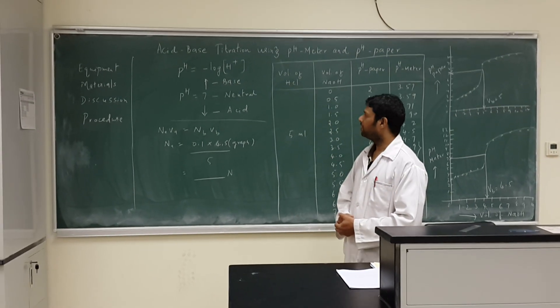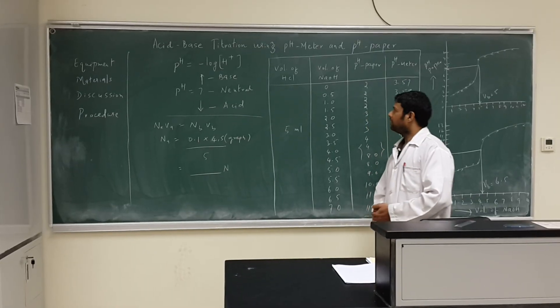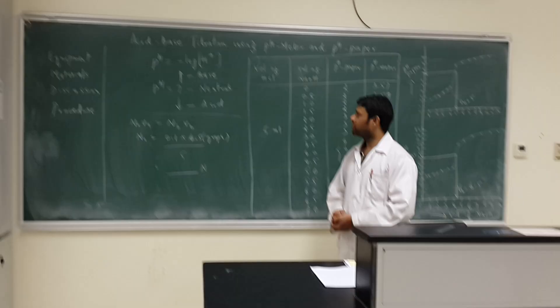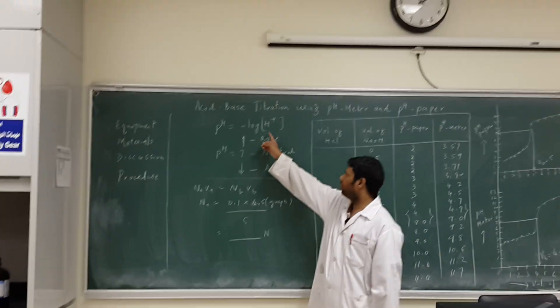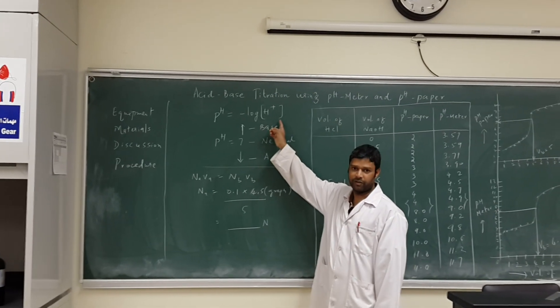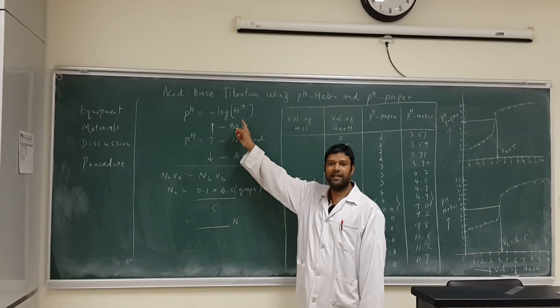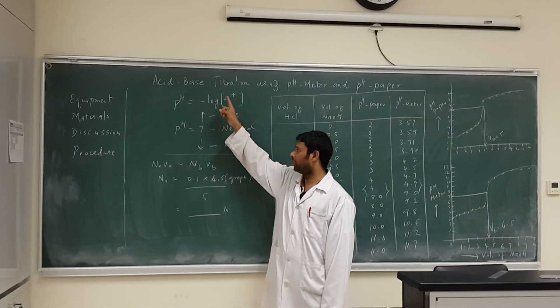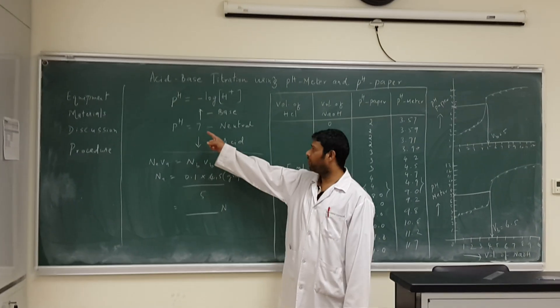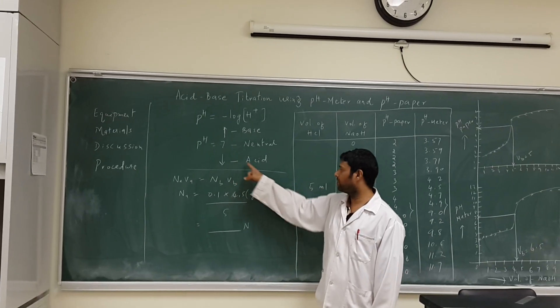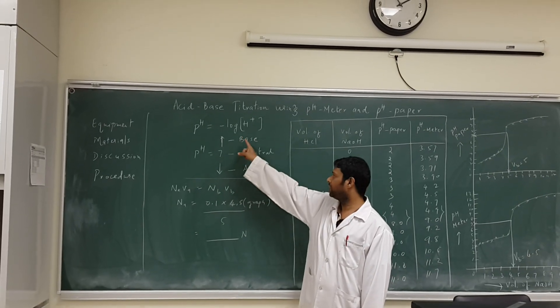The discussion: you need to know what is pH. pH is nothing but negative logarithm of hydrogen ion concentration. You need to define this and apply this formula when solving the exercise. pH of water is always 7, which is neutral. Less than that is acid, above that is base.